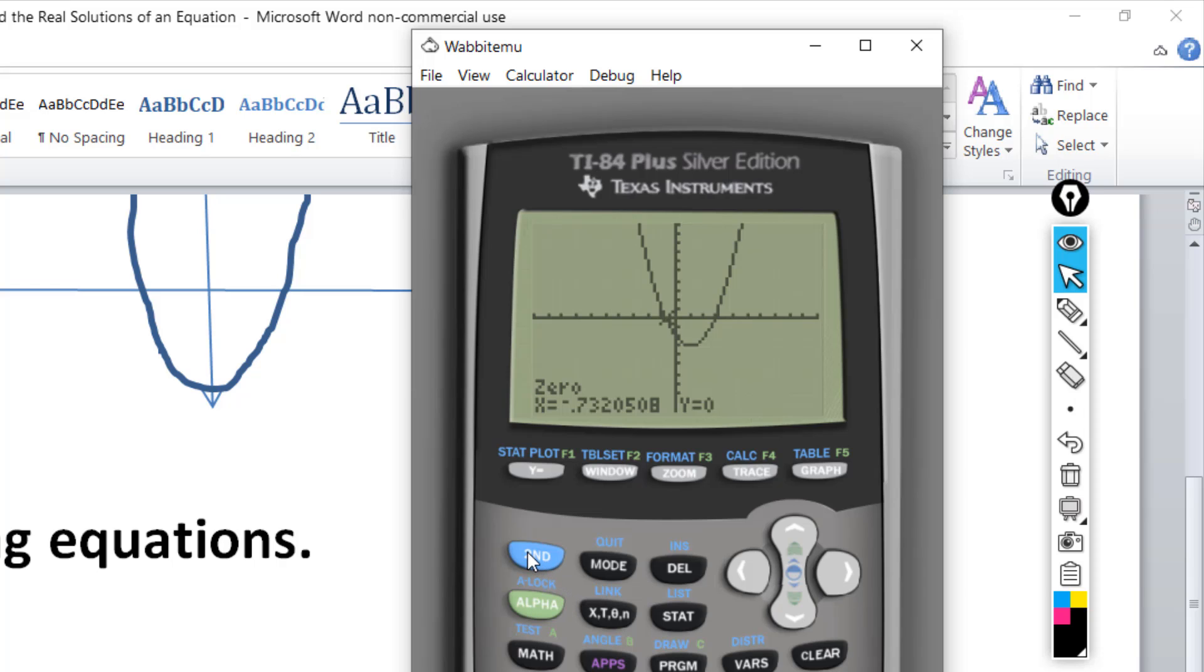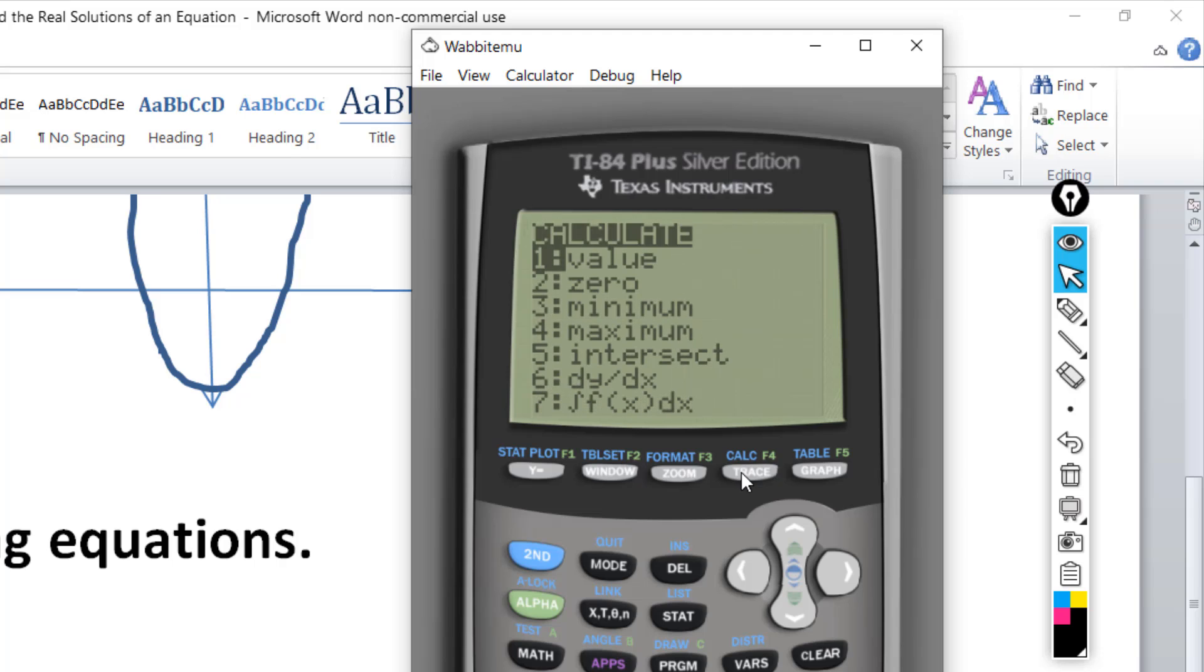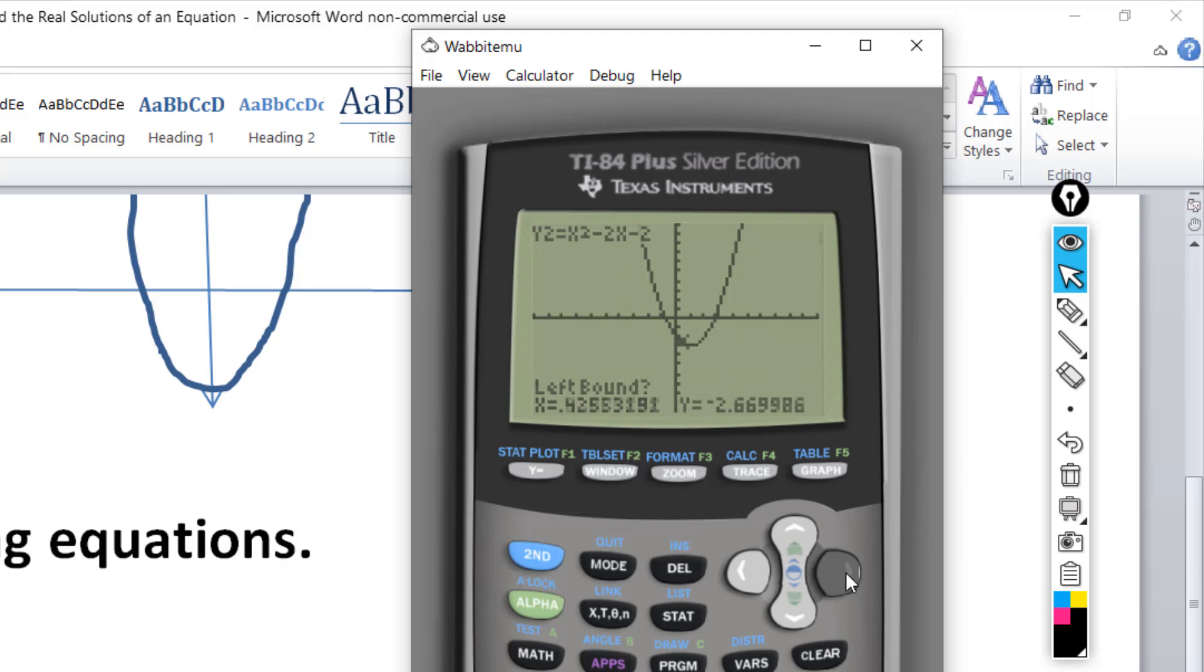Now let's try it again and get the other one, second, and then trace, hit two again, and just go to the other one. Once a left bound, stay to the left, hit enter. Now it wants a right bound, so go forward, past it, hit enter. Now it wants a guess, ignore it, and just hit enter. And we get zero when x is 2.732.